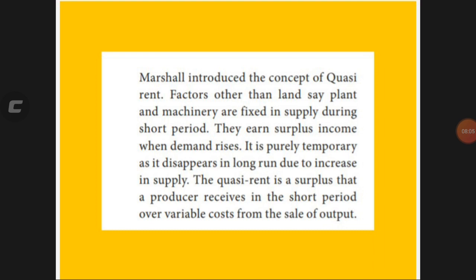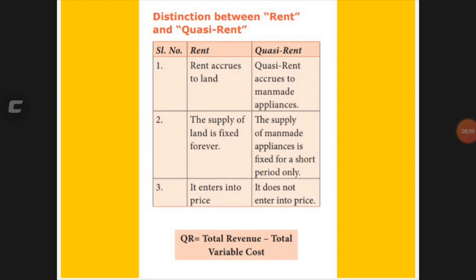According to Marshall, there is a comparison between rent and quasi-rent. Rent applies only to land and natural resources, while quasi-rent applies to man-made appliances such as plant and machinery used in a firm. The supply of land is fixed forever — its fertility is permanent — while man-made appliances can only last for a shorter period and can be destroyed. Rent can enter into price, but quasi-rent cannot. The formula for quasi-rent is: total revenue minus total variable cost.